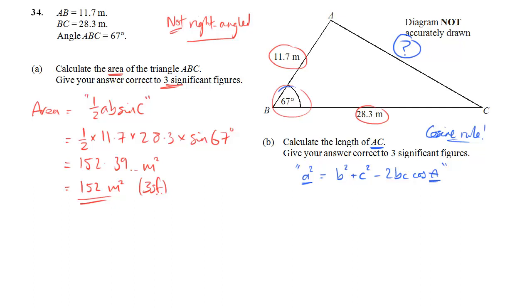So little a is that thing that we want to find out, the question mark. And big A, the angle, is 67 degrees. And the other two sides make up your B and your C.